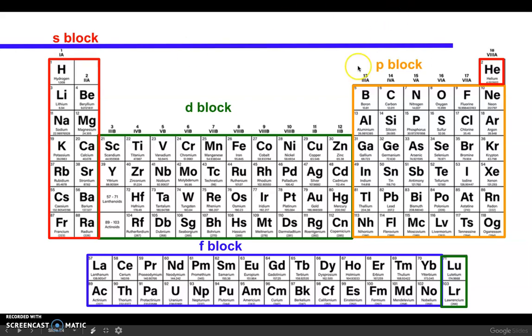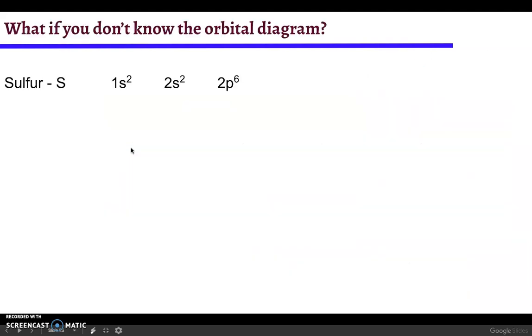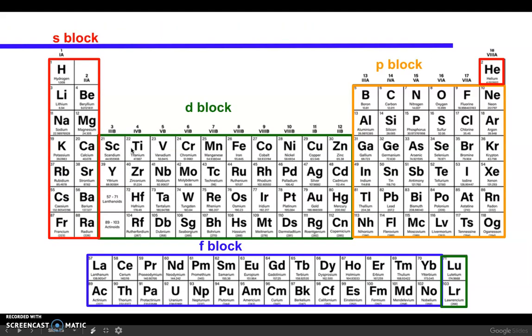Next we're in our p block, so we're still in the second row but now we're in the p block, and that can hold six electrons. So next up is going to be 2p6. Now we're back down here in the third row. We're back in the s block, so we're going to write this as 3s2.